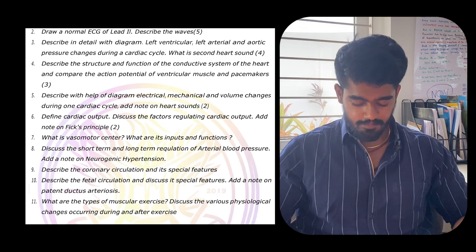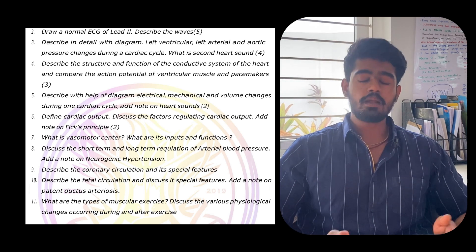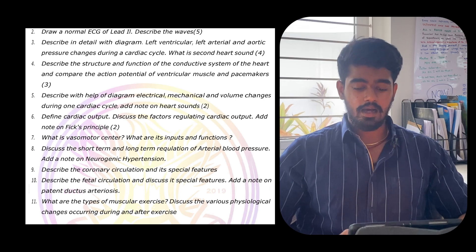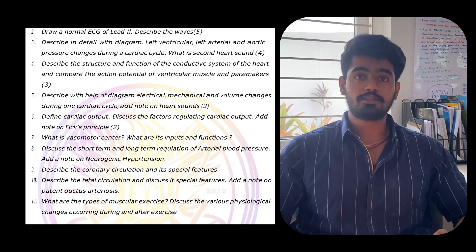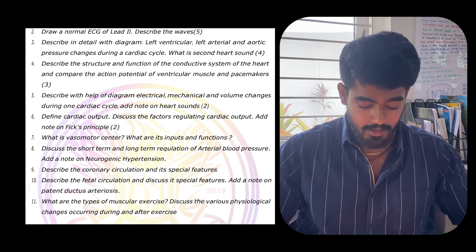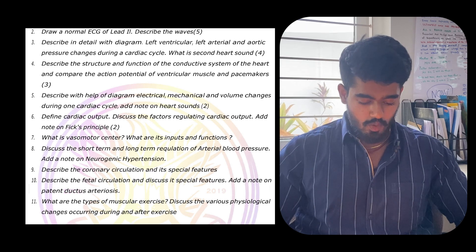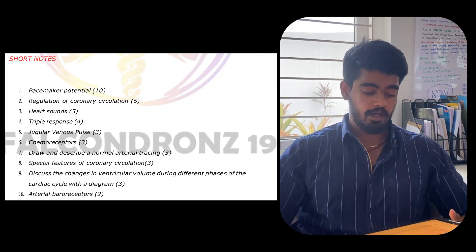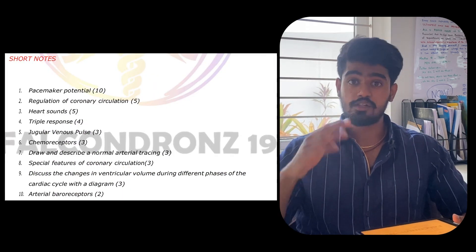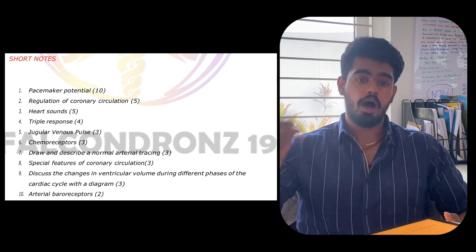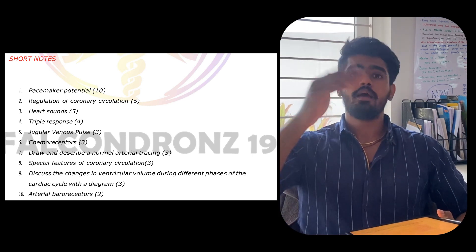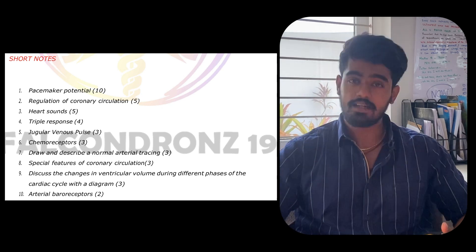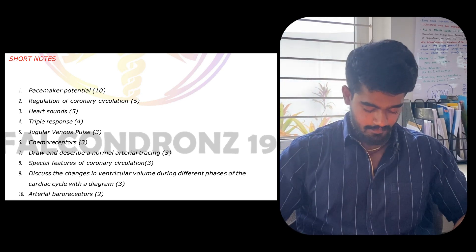For CVS — blood pressure is very very important. Also study ECG, normal ECG, heart sounds, and cardiac cycle — crazy important. Vasomotor center is not that important. Short notes include: pacemaker potential, regulation of coronary circulation — very important — heart sounds, and triple response. In the comment section, explain what triple response is — it's a very interesting question. Also study baroreceptors and hypovolemic shock.